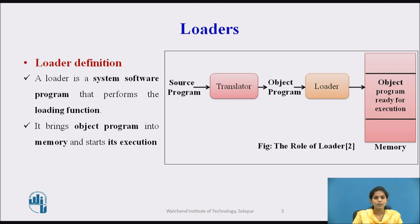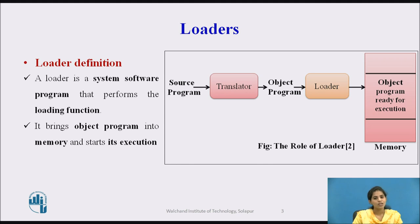The translator may be an assembler or compiler, which generates the object program, that is machine language code. Then that object program is given as an input to the loader. The loader loads the object program into the primary memory for the execution. This is the simple figure of the loader.